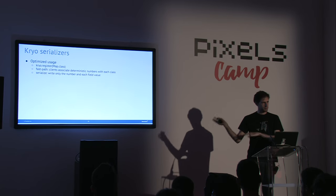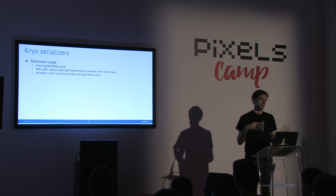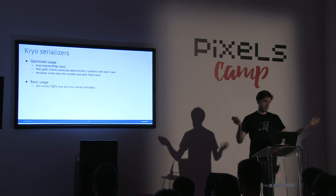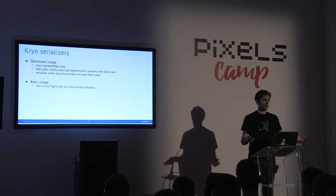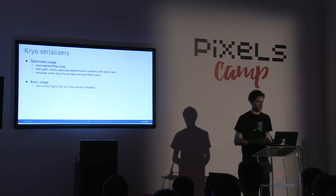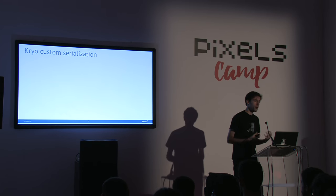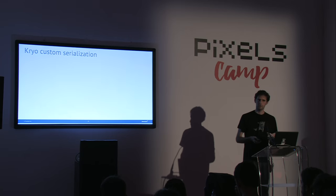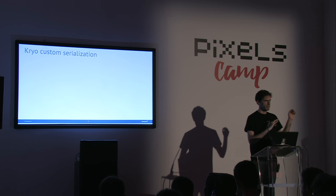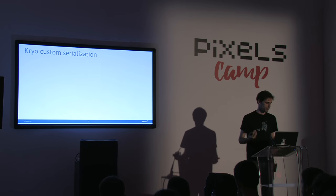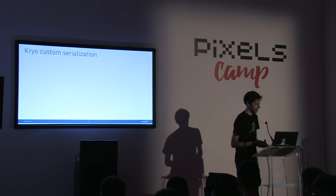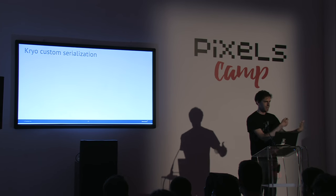Spark pre-registers some of the classes it uses most often. If you just enable Kryo without registering anything, it still writes the fully qualified class name, but with less overall metadata than Java serialization — so you're still winning. If you do register your classes, you get an order of magnitude improvement in performance. We improved performance over 50% by implementing custom serialization for a class that was appearing very often. Serialization happens a lot during shuffles, which are the most expensive part, so this really matters.